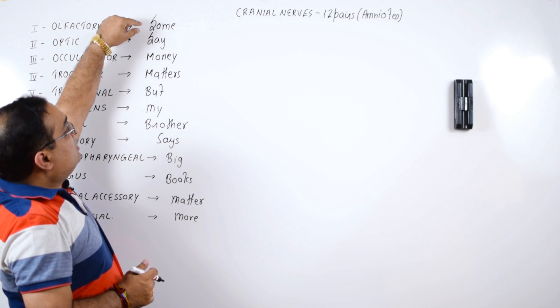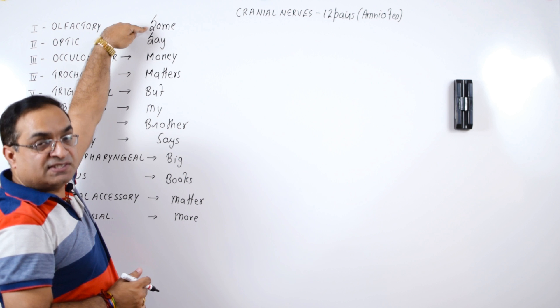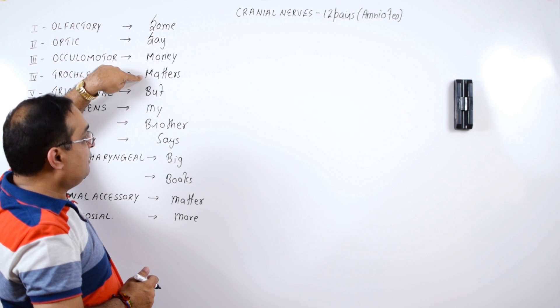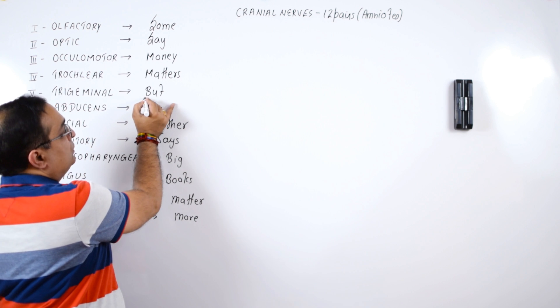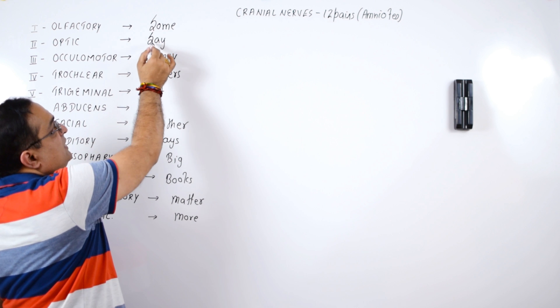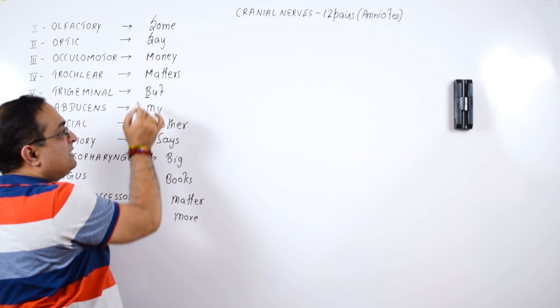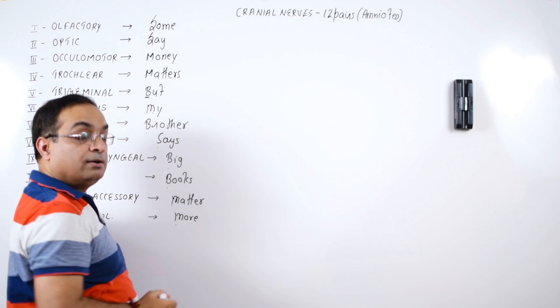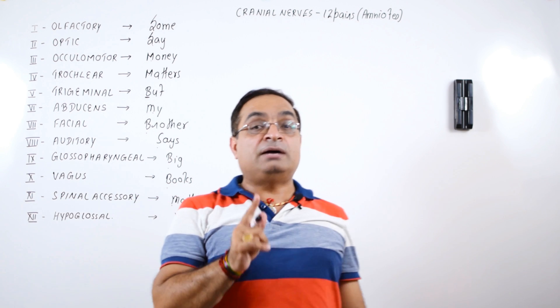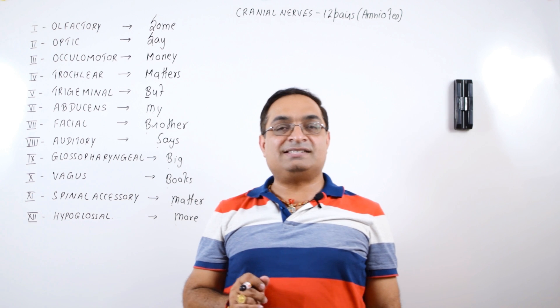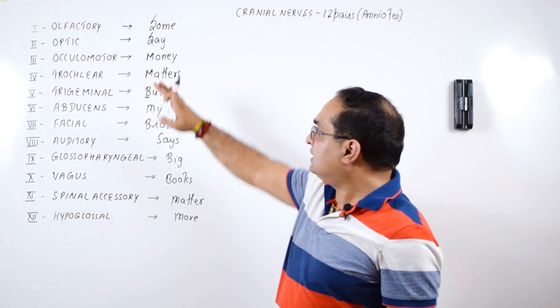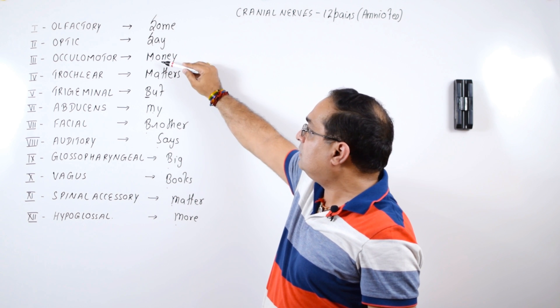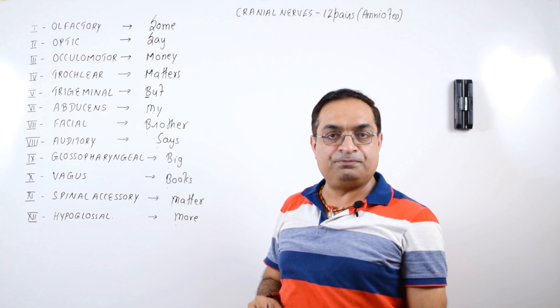Let's write this sentence. Some Say Money Matters But My Brother Says Big Books Matter More. You have to remember this sentence in sequence. This will give you a clue that the first alphabet stands for sensory, second is sensory, third is motor, fourth is motor, B stands for both, both means mixed. So sensory, sensory, motor, motor, both (that is mixed), then motor, both, sensory, both, both, again motor and motor. So remember this in sequence, that will give you a clue that the first cranial nerve is sensory, second is sensory, third is motor, fourth is motor and then so on. Is it clear?